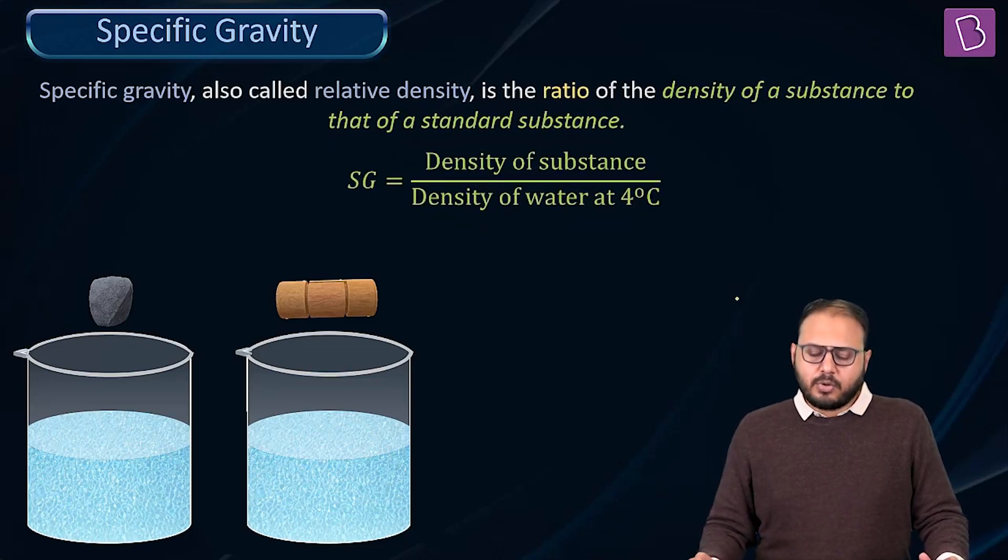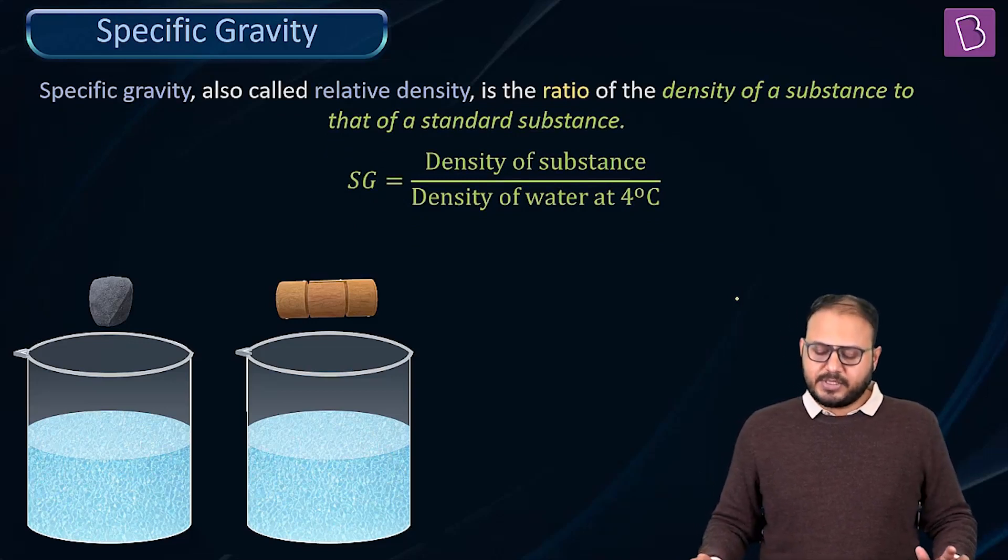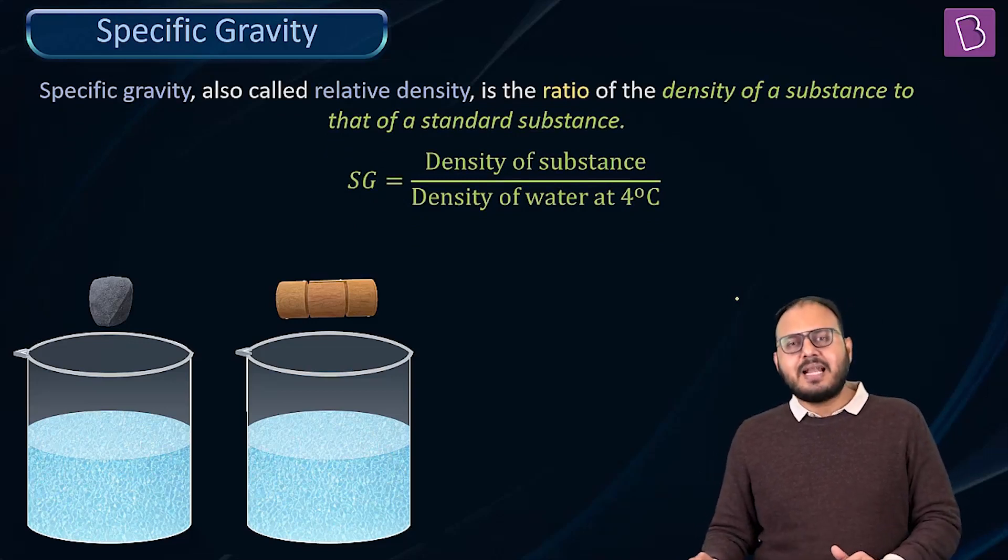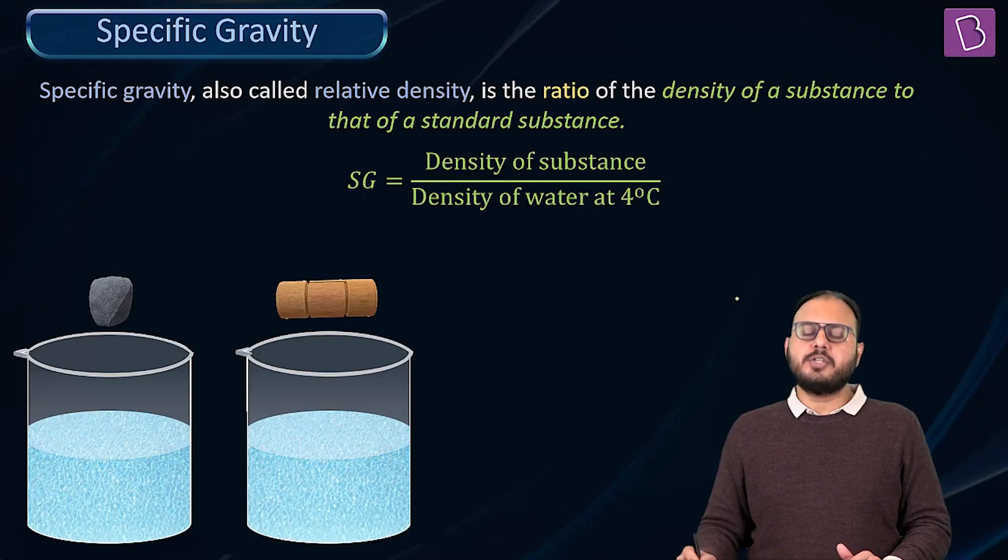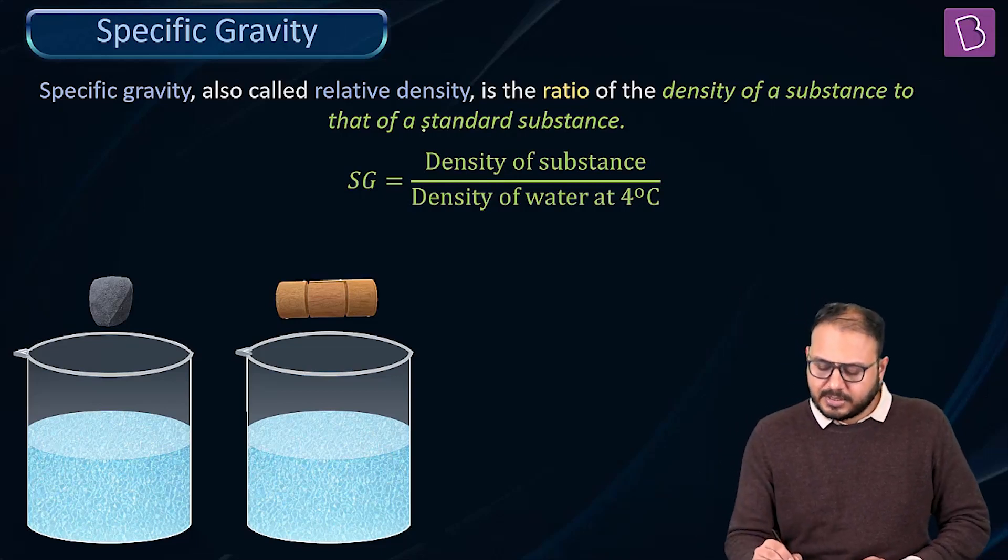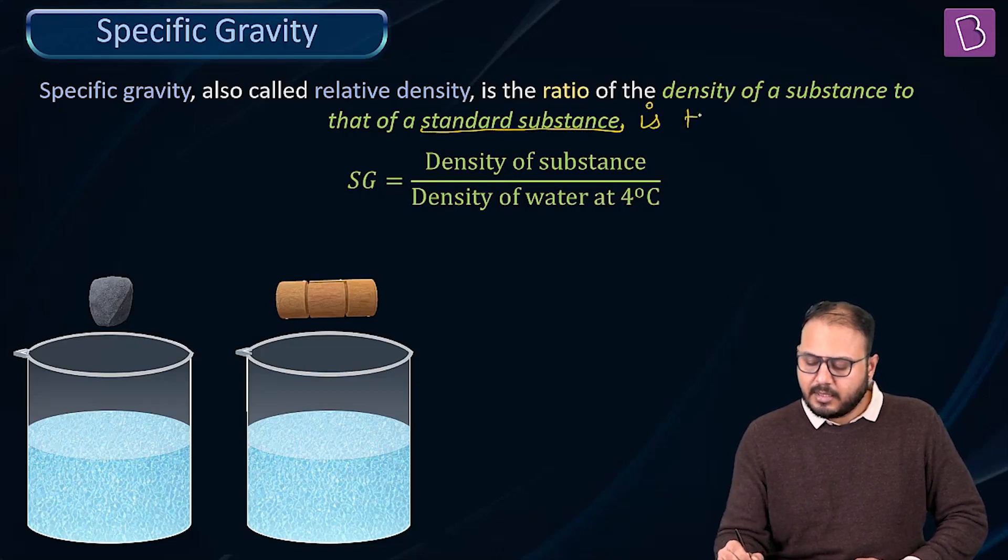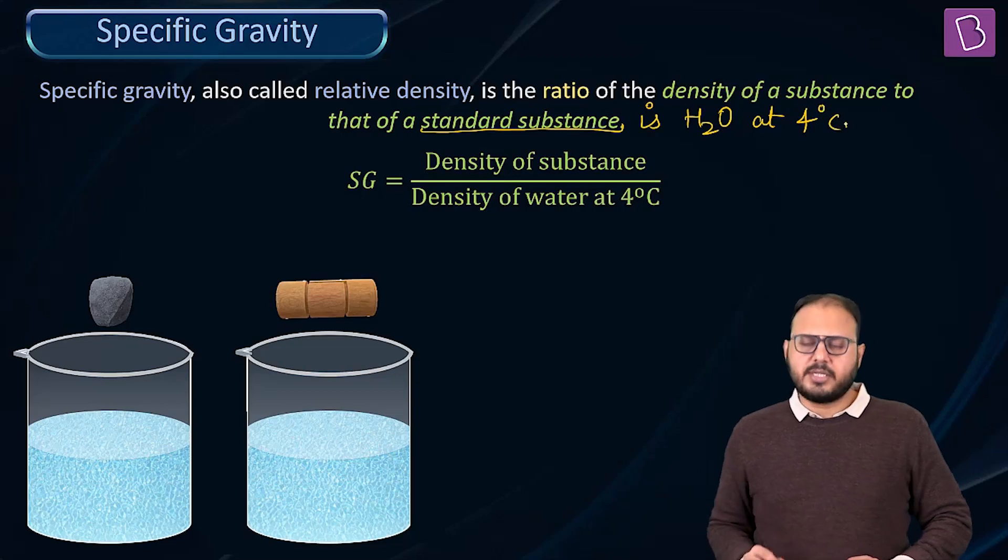Specific gravity, also called relative density, is the ratio of the density of a substance to that of a standard substance. And we have already chosen that standard substance. That standard substance is H2O at 4 degrees Celsius.